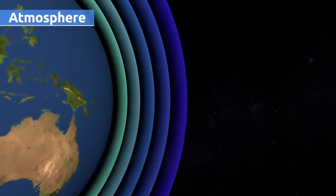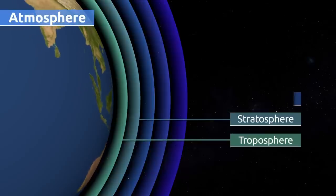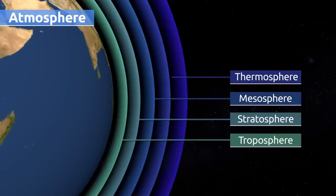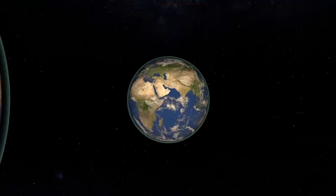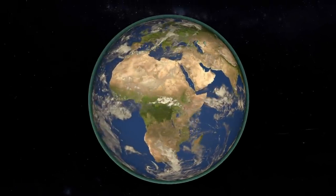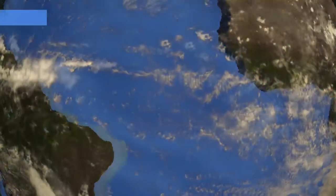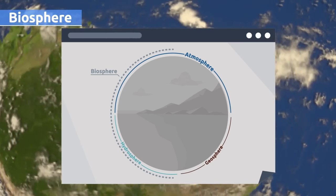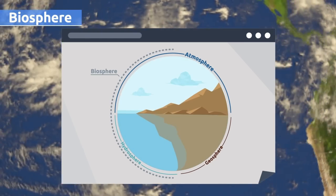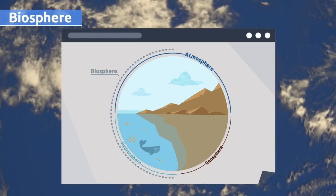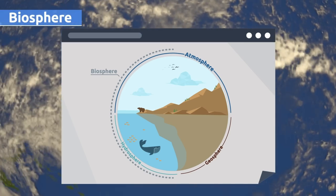The atmosphere is divided into five main layers: the troposphere, the stratosphere, the mesosphere, the thermosphere, and the exosphere. As we reach the surface of the earth, we find the biosphere and the hydrosphere. The biosphere is made up of all living beings. This layer extends downward to the depths of the oceans and upward to about 10 kilometers over sea level. Plants, animals, fungi, and bacteria live in this layer, together with all human beings.